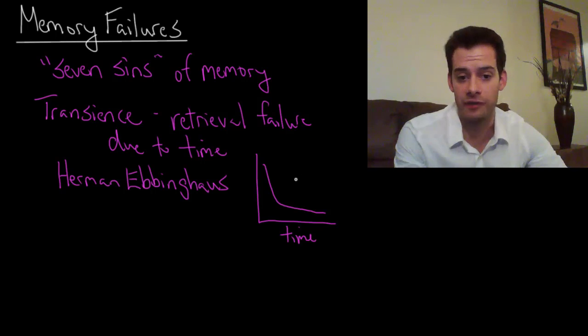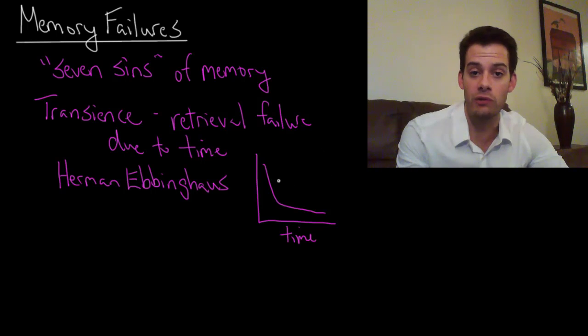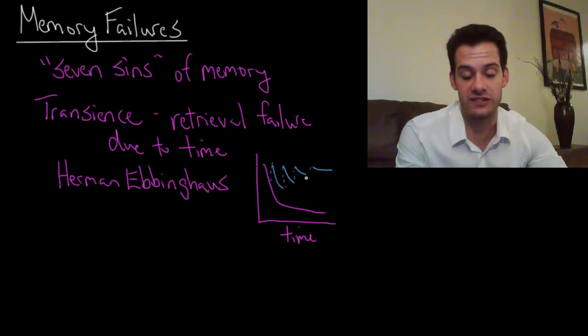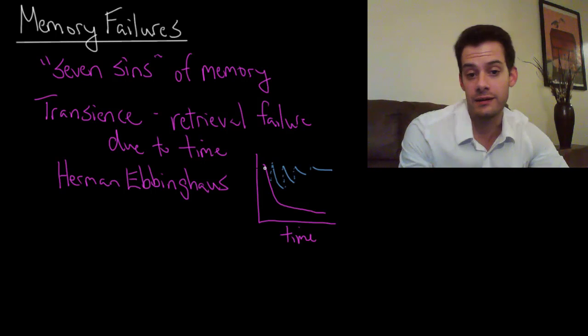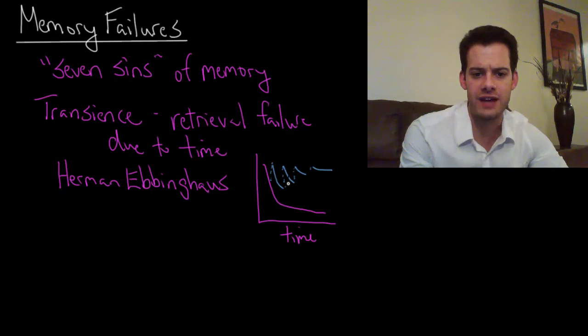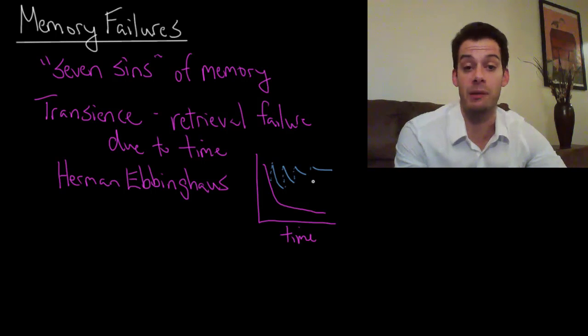The important lesson from the forgetting curve is that each time you review that information, so if you were to restudy that information, you sort of bring the curve back up and it starts falling over time and then hopefully you study again. And then it starts falling and you study again and you study again and what you can do over time is sort of flatten it out where you actually are able to maintain a lot of that memory over time. And so as you can see the best way to do that is to review information repeatedly. Cramming for one night, within a few hours you've probably forgotten most of that. Whereas if you spread out that review over time then you have a better chance of remembering more of it.